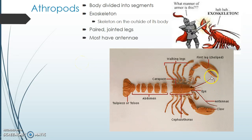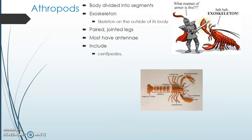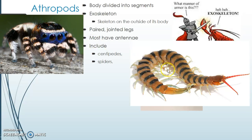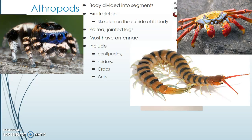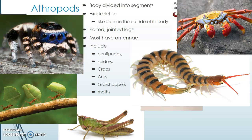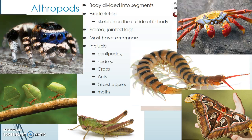Most of them will have antennae sticking out the front of the body. This group includes centipedes, spiders — also yuck, but I found a cute one — these two groups of course can be quite toxic. Also crabs, ants, grasshoppers, and moths — and there's a giant atlas moth.